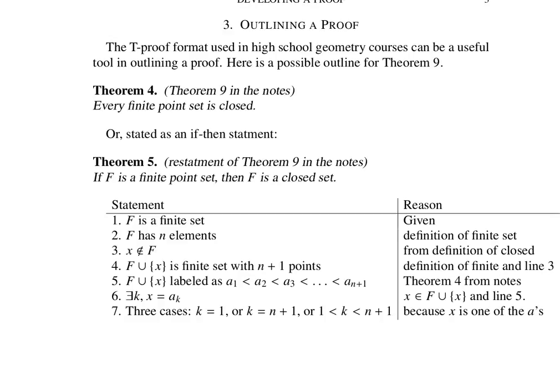K is equal to n plus 1, which would make x the last point. Or k is something between 1 and n plus 1, which makes x one of the points somewhere in between.